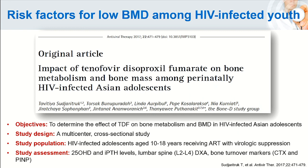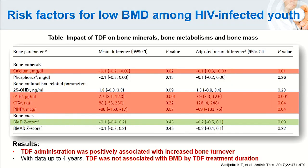Regarding tenofovir, we all know that TDF (tenofovir disoproxil fumarate) is a bone-unfriendly agent. We conducted a study to determine TDF's impact on bone mass in our adolescents. TDF users had significantly lower calcium levels and bone formation markers, and significantly increased iPTH and bone resorption markers. However, we could not demonstrate a significant change in bone mineral density Z-scores between TDF users and non-users, likely because our four-year follow-up was too short to detect long-term bone complications.